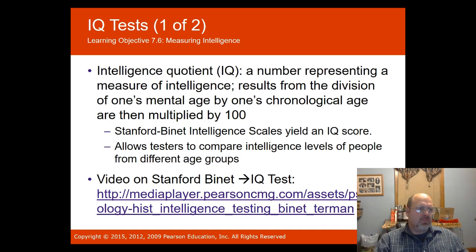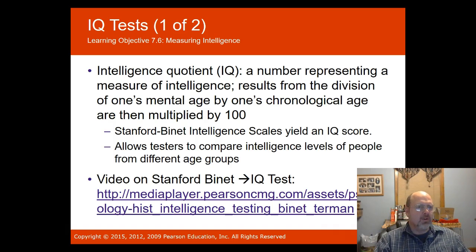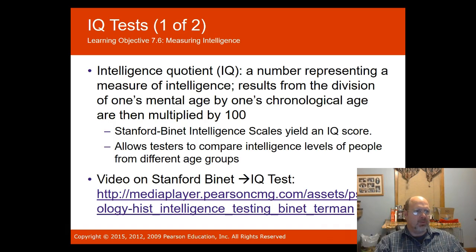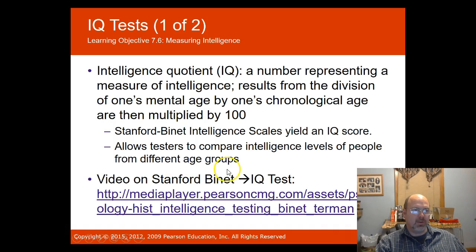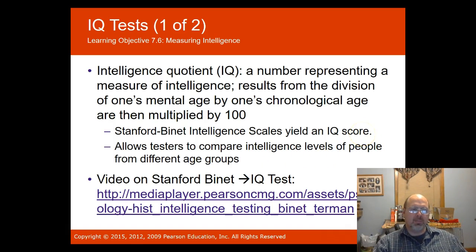Alfred Binet developed the intelligence quotient — a number representing a measure of intelligence resulting from dividing one's mental age by chronological age and multiplying by 100. The Stanford-Binet intelligence test yields an IQ score and allows testers to compare intelligence levels across age groups. Today's intelligence tests are norm-referenced with students of similar age to produce a percentile rank.